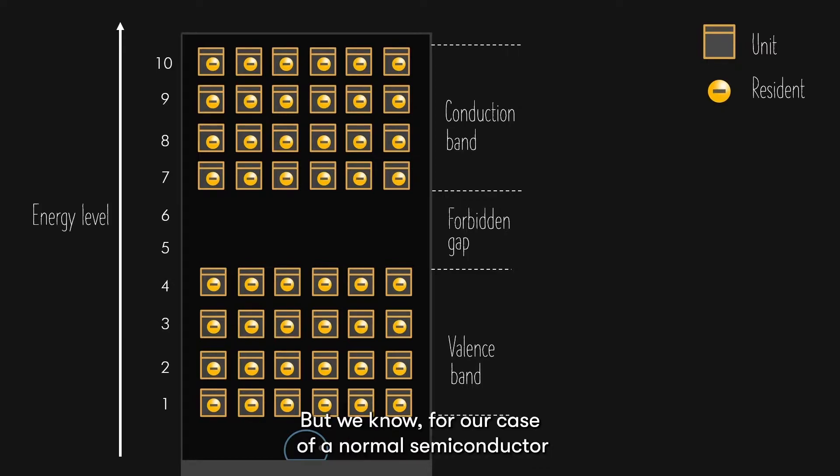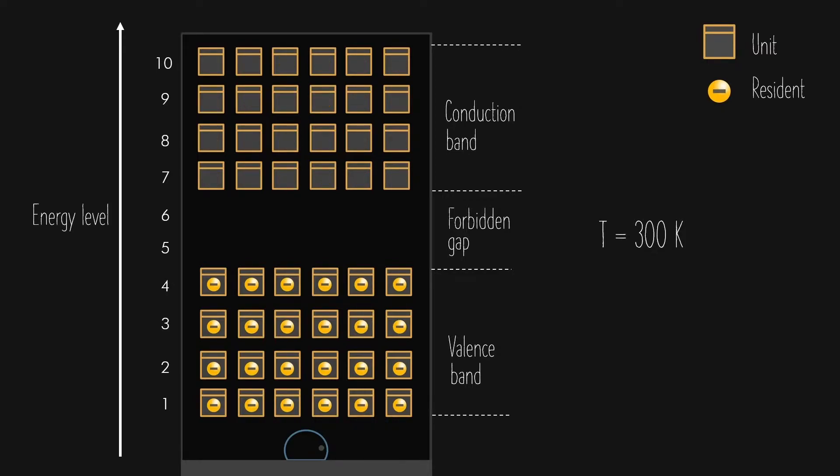But we know, for our case of a normal semiconductor at room temperature, which is about 300 kelvins, there are actually no electrons in the conduction band. All electrons only reside in the valence band.